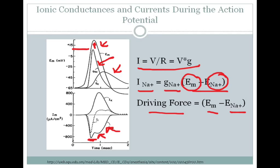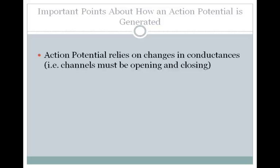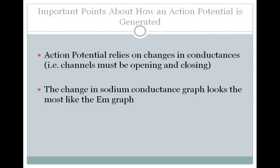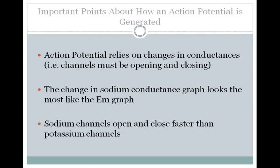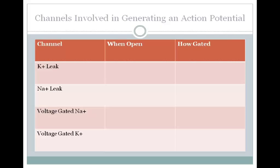From these graphs, you can conclude three important points about how an action potential is generated. First, action potentials rely on changes in conductances, meaning channels must be opening and closing during the timescale of the action potential. Second, the change in sodium conductance graph looks the most like the membrane potential graph, so changes in sodium conductance are the biggest drivers. And third, sodium channels open and close faster than potassium channels.